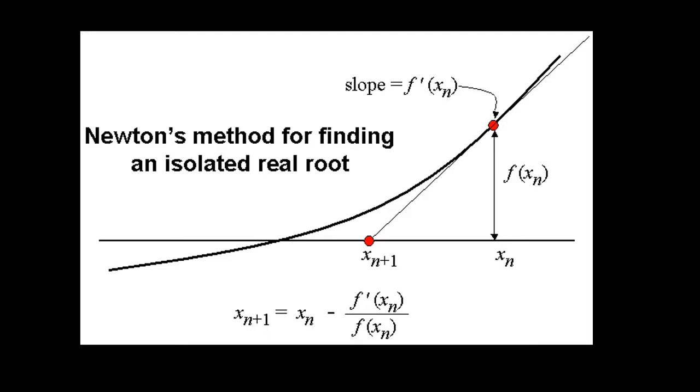To start off, Newton's method is an algorithm used to approximate zeros of a polynomial or a function, and it is a lot less complicated than you think.